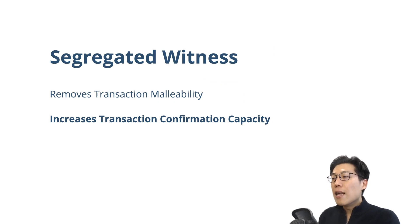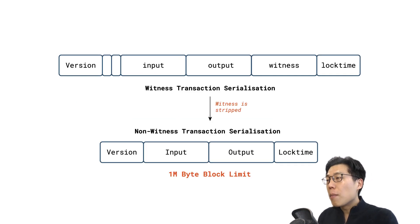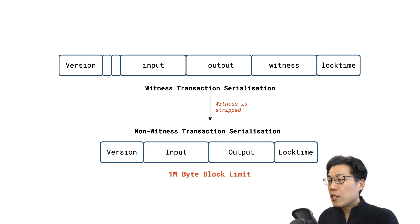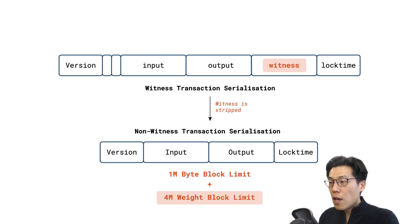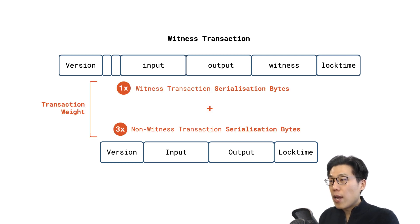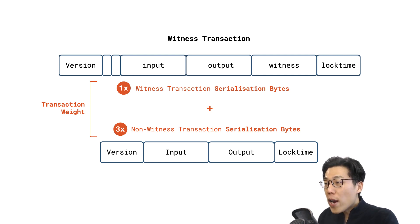So now that we've fixed malleability, let's consider the increase in confirmation capacity which Segregated Witness enables. The previous 1-megabyte block limit still applies with the introduction of Segregated Witness. For the computation of the 1-megabyte limit, the witness transaction and flags are simply stripped, and the serialization in its original transaction format is used. The 1-megabyte block limit therefore only applies to non-witness data. So in order to provide an upper bound to the witness data in each block, the concept of weight was introduced together with a block weight limit of 4 million. The weight of a transaction is computed as follows: the transaction data is serialized in both witness and original transaction formats. The weight of the transaction is the byte sum of the two serializations, where the bytes of the original serialization format are weighted higher by a factor of 3.